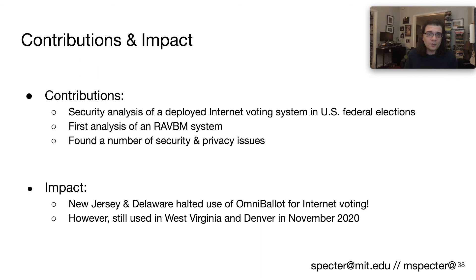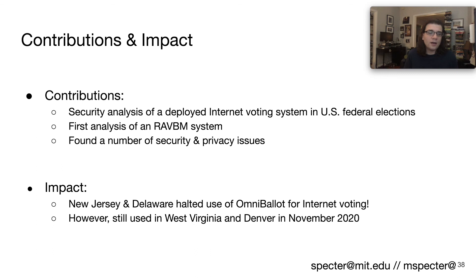To summarize, we presented the first security analysis of an internet voting system in US federal elections, and in fact the first analysis of a remote accessible vote-by-mail system. We found a number of security and privacy issues that were then reported both to the vendor and to CISA, DHS, and the affected parties. What I'm really proud of is that New Jersey and Delaware actually halted use of OmniBallot for electronic return. However, the system was still used in West Virginia and Denver in November 2020. So with that, thank you so much for tuning in, and I look forward to hearing your questions.